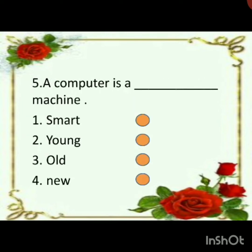Fifth one: a computer is a dash machine. See the options here. First option is smart, second option young, third option old, and the fourth option is new. Which is the right option? Is it a smart machine, young machine, old machine, or new machine? You have to make the tick mark.